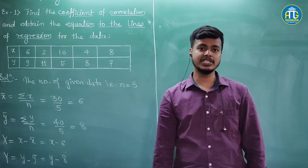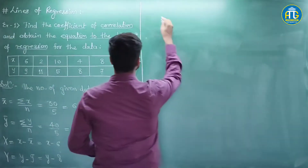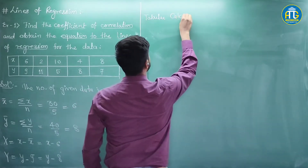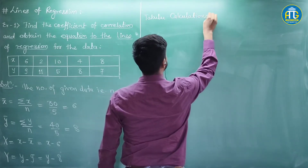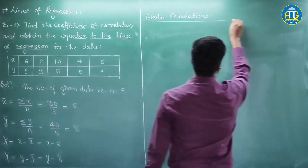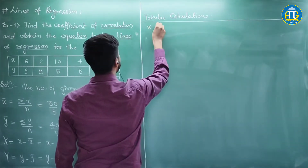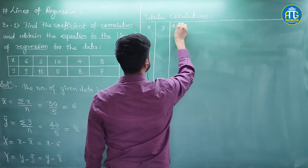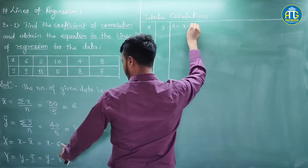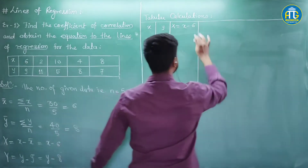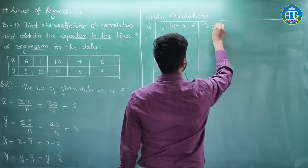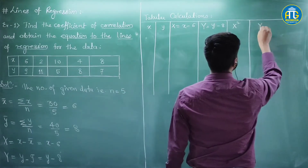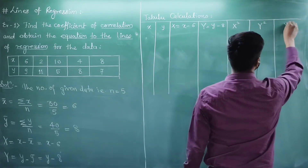To find the coefficient of correlation we go for tabular calculations. The table will have the columns: x (given data), then y, then capital X which is x minus x̄ (x minus 6), then capital Y which is y minus ȳ (y minus 8), then X square, Y square, and finally XY.